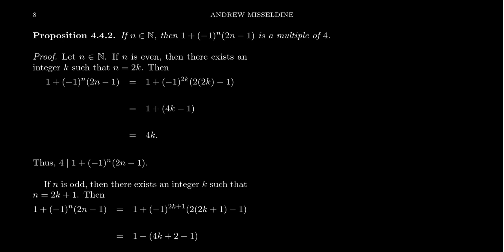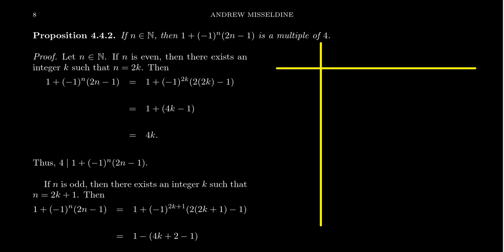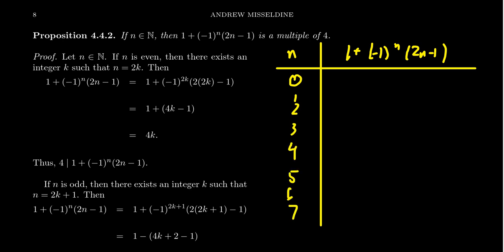Let's make a table. Along the top we have n, and then our quantity 1 plus (-1)^n times (2n minus 1). For n = 0: you get 1 plus (-1)^0 times (2·0 minus 1), which gives 1 plus 1 times (-1) = 0, and 0 equals 4 times 0, so that's a multiple of 4. For n = 1: you get 1 plus (-1) times (2·1 minus 1) = 1 minus 1 = 0, which equals 4 times (-0) — I'll write it as negative zero to indicate the pattern that's forthcoming.